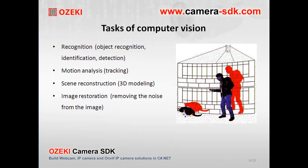Now let's go over the tasks of computer vision. One of the tasks is recognition — lines, corners, or faces can be recognized on the image from the camera. Another task is motion analysis, where movements can be detected on the camera image.